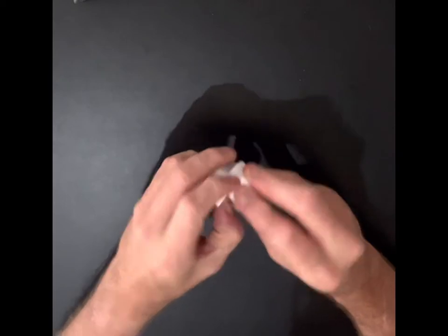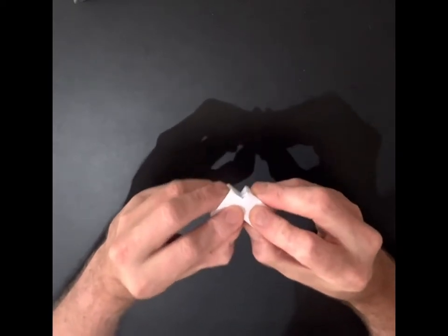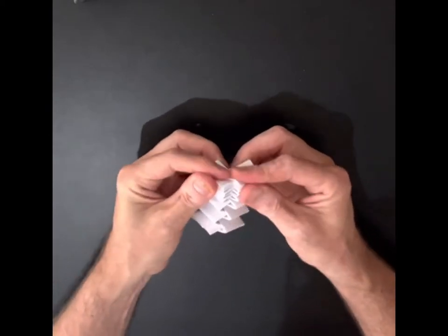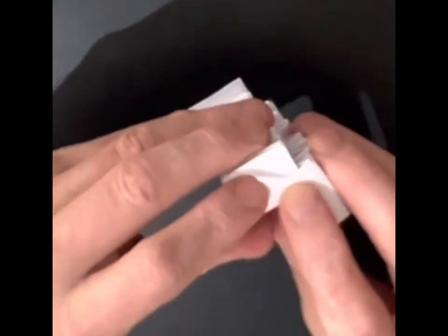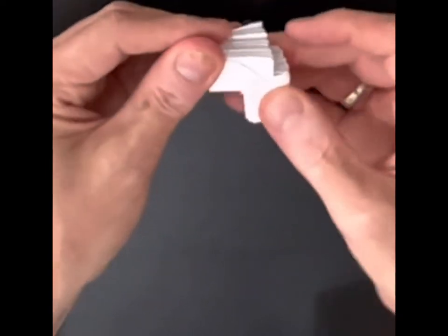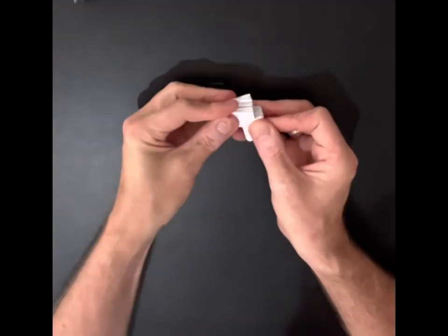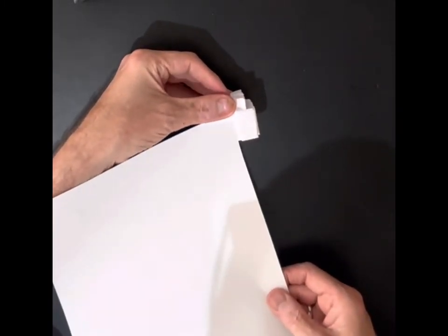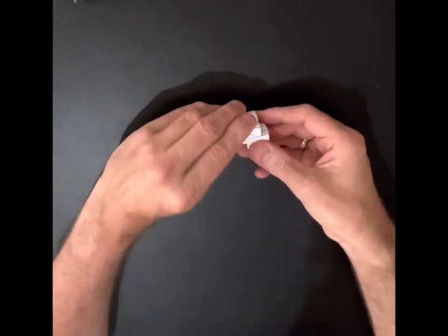So now I'm going to pull this into a 90 degree angle. Let's have a look at that. This here is 90 degrees. I'll show you by putting a piece of paper in there. It's roughly 90 degrees.